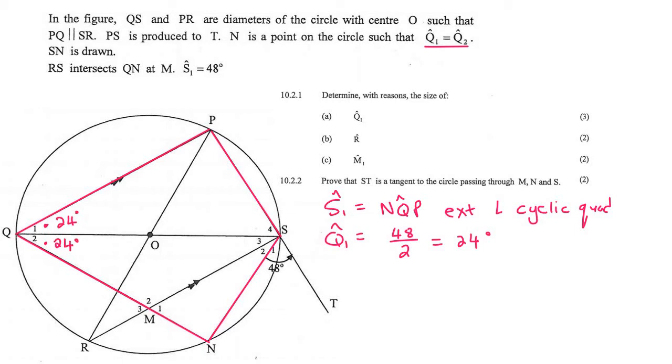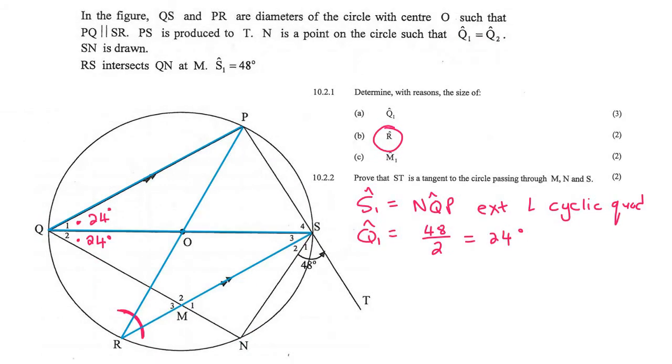The next question asks for angle R. So that's this one over here. Now immediately, I saw a bow tie looking shape. So if you ever have a bow tie shape, like that for example,